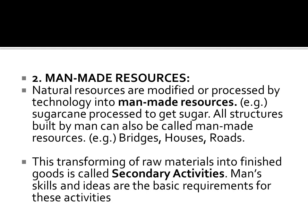Man-made resources: Natural resources are modified or processed by technology into man-made resources — for example, sugarcane processed to get sugar. All structures built by man can also be called man-made resources — for example, bridges, houses and roads. This transforming of raw materials into finished goods is called secondary activities. Man's skills and ideas are the basic requirements for these activities.